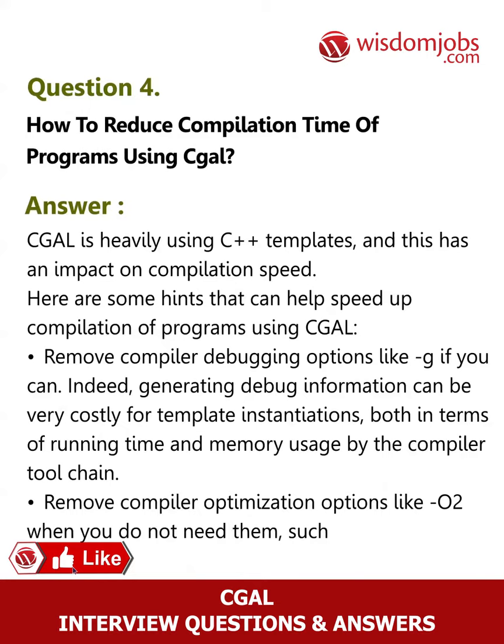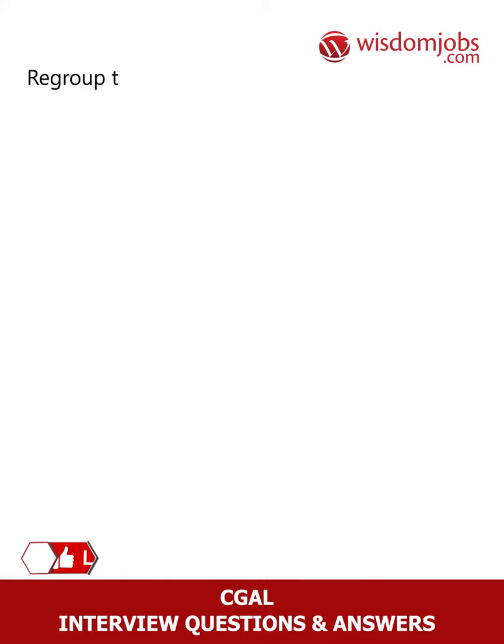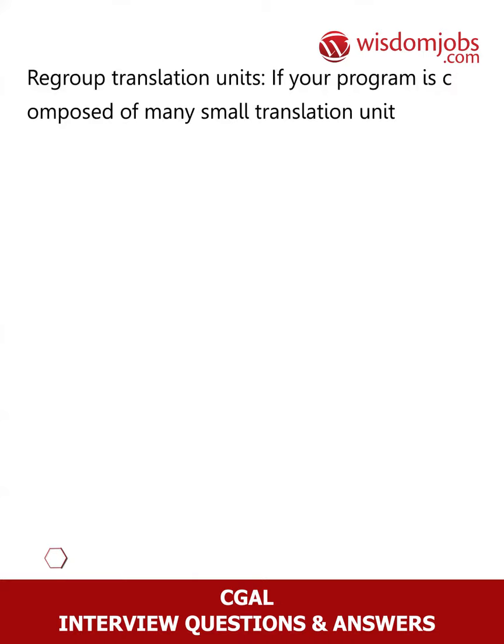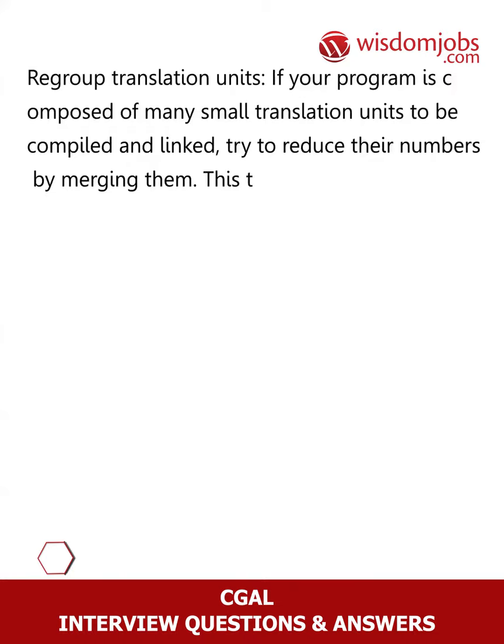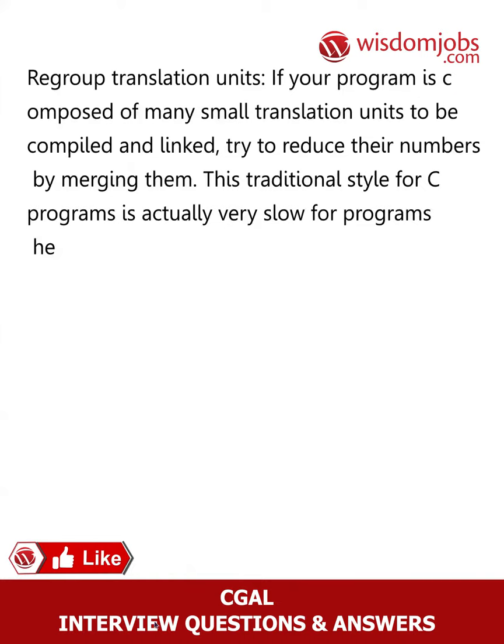Regroup translation units: if your program is composed of many small translation units to be compiled and linked, try to reduce their numbers by merging them. This traditional style for C programs is actually very slow for programs heavily using C++ templates.